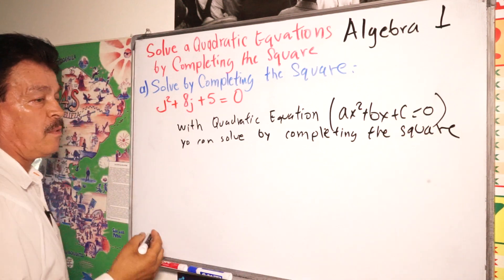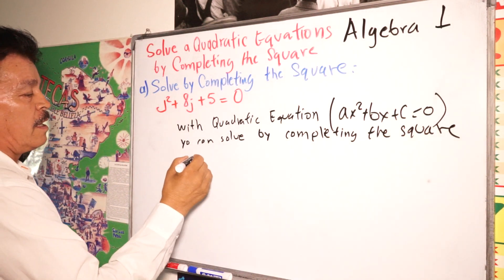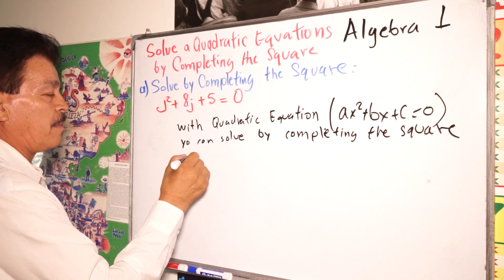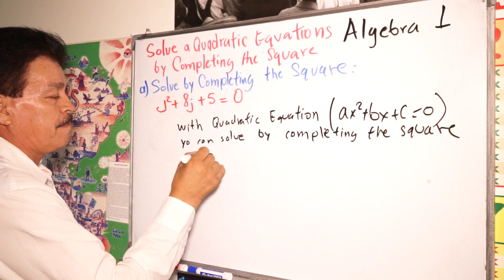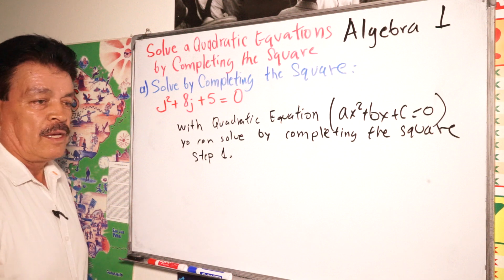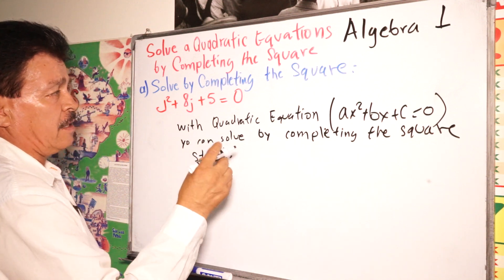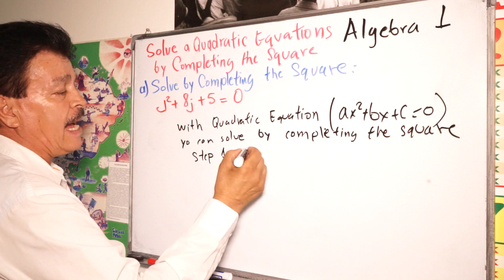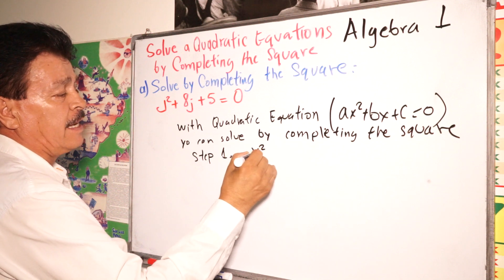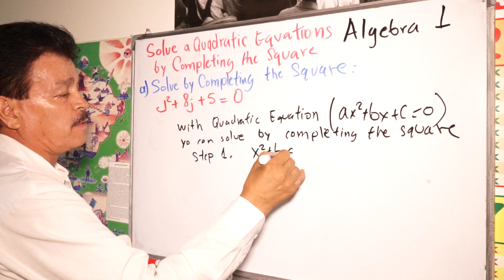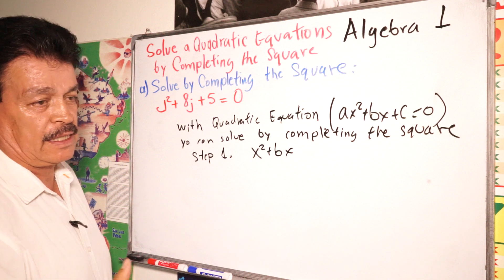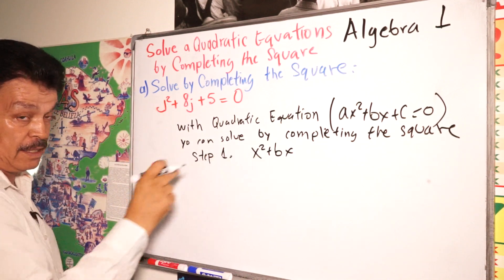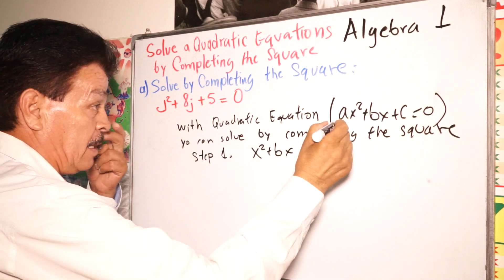Step one: we must be sure that your equation looks like x² + bx. This is the process — you need to confirm your equation is in this form.